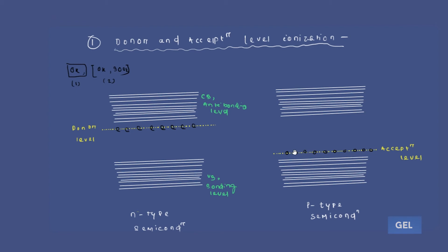For the acceptor level, if you increase the temperature from 0 Kelvin onwards, all the holes present at the acceptor level start shifting from this level to the valence band. This is called acceptor level ionization. Due to this acceptor level ionization, the acceptor level also starts shifting from its initial position toward the valence band.